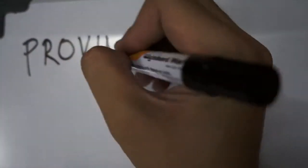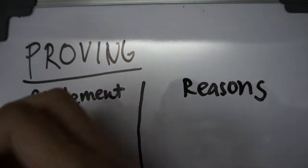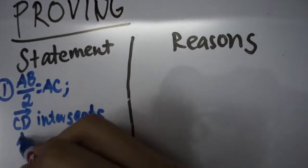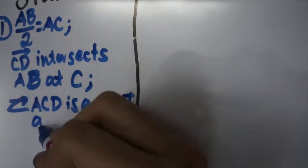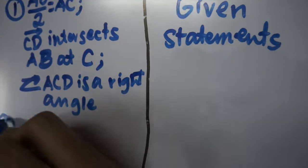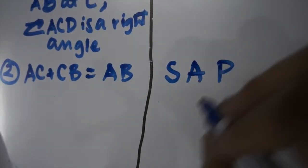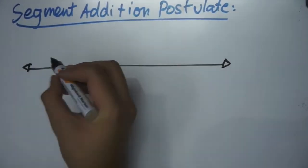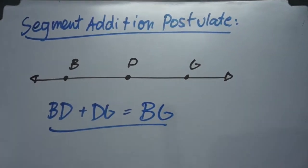The first step in proving the given statement is to list down the given. In this case, the given is AB over 2 equals AC, ray CD intersects AB at point C, and angle ACD is a right angle. The reason for this is always given statements. Following that, we can now state that AC plus CB equals AB. This is due to the segment addition postulate, which states that if D lies in between B and G, then BD plus DG equals BG.